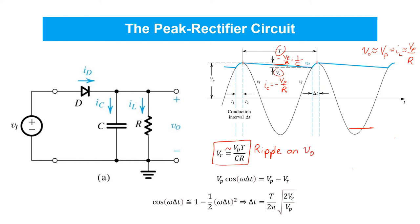Again, it's approximate but will be relatively accurate, assuming that the conduction interval is very, very short and also assuming that we can neglect the forward voltage drop of 0.7 volts. If we wanted to include that, there's simply a minus 0.7 volts to be included there.